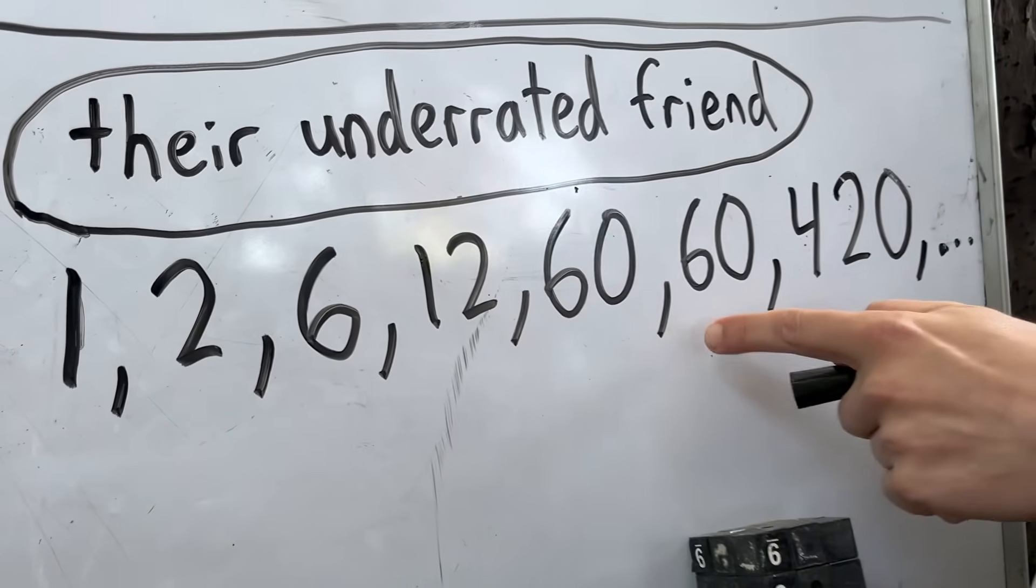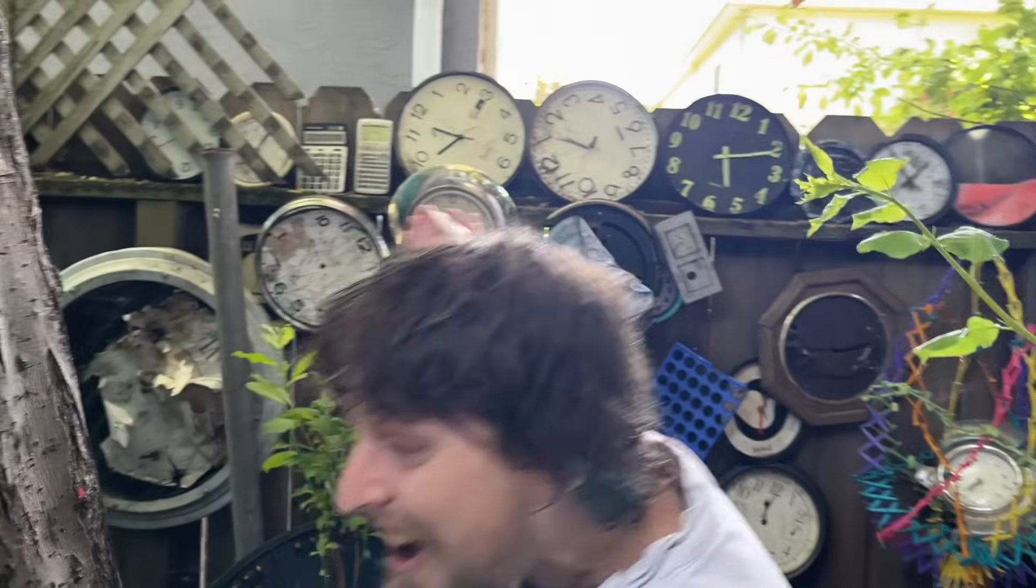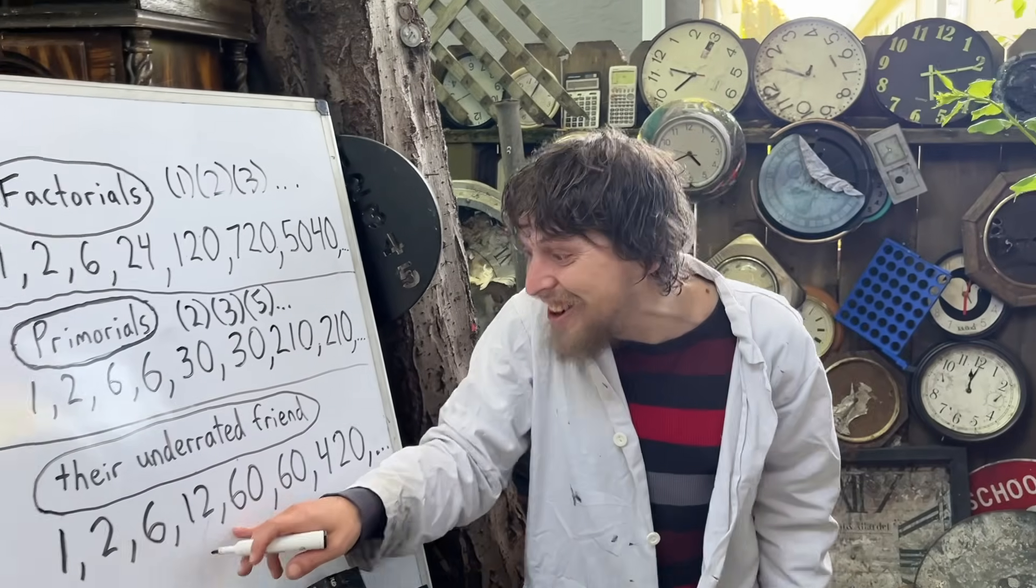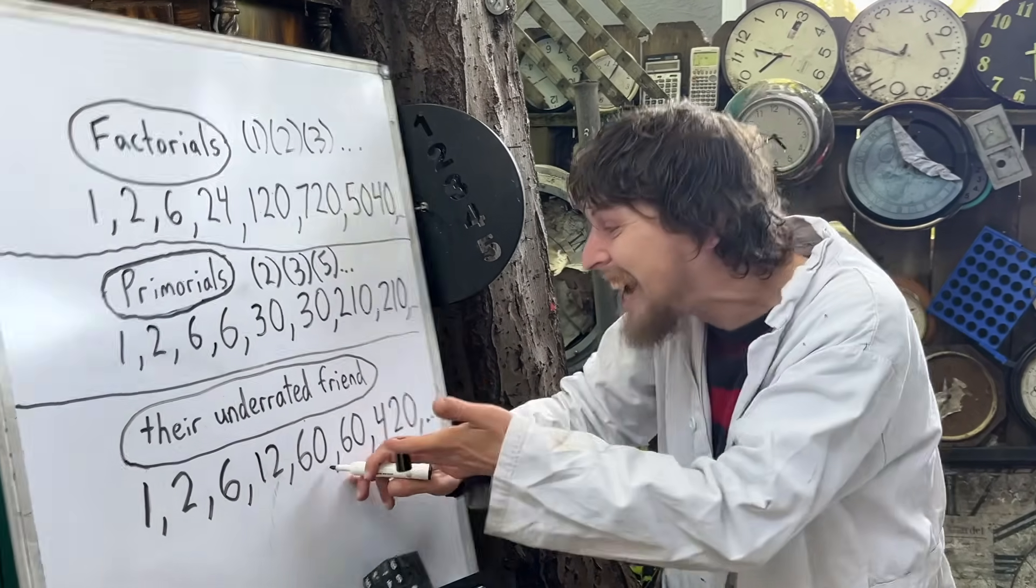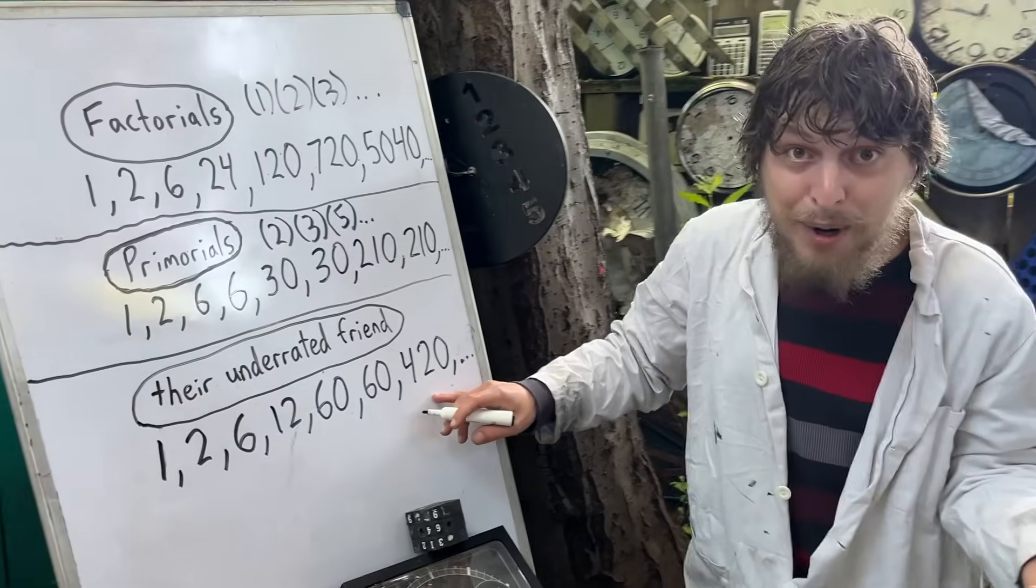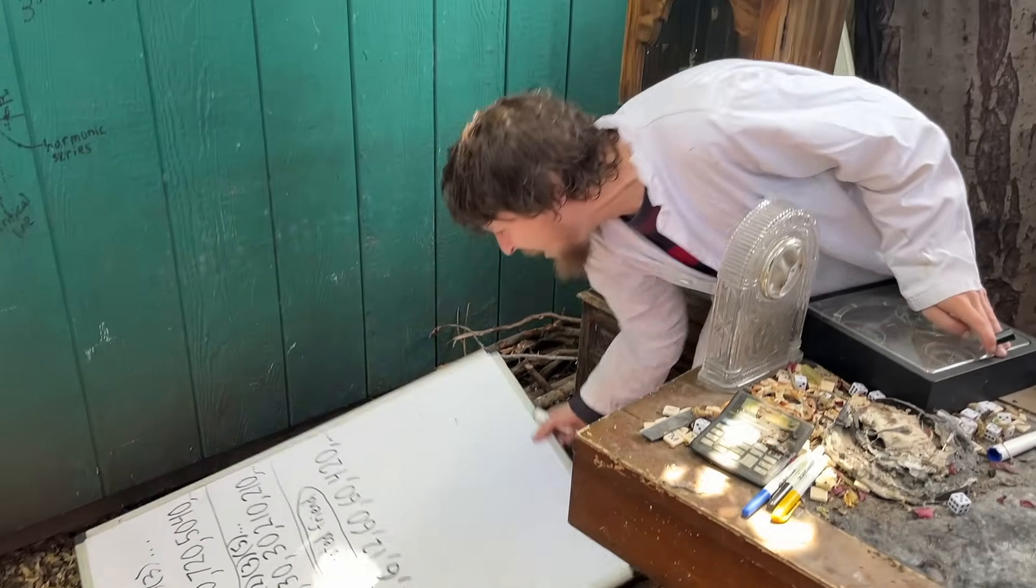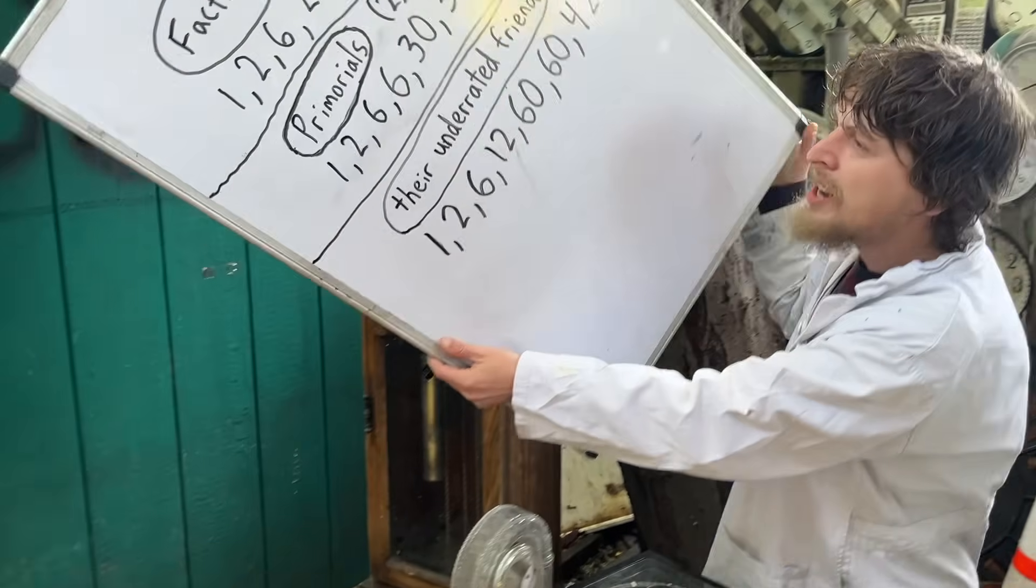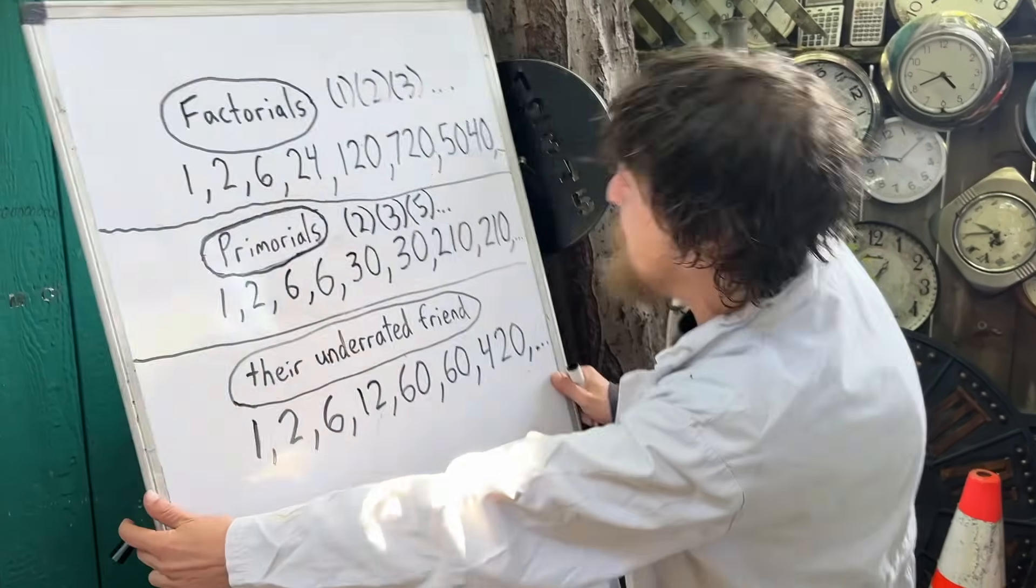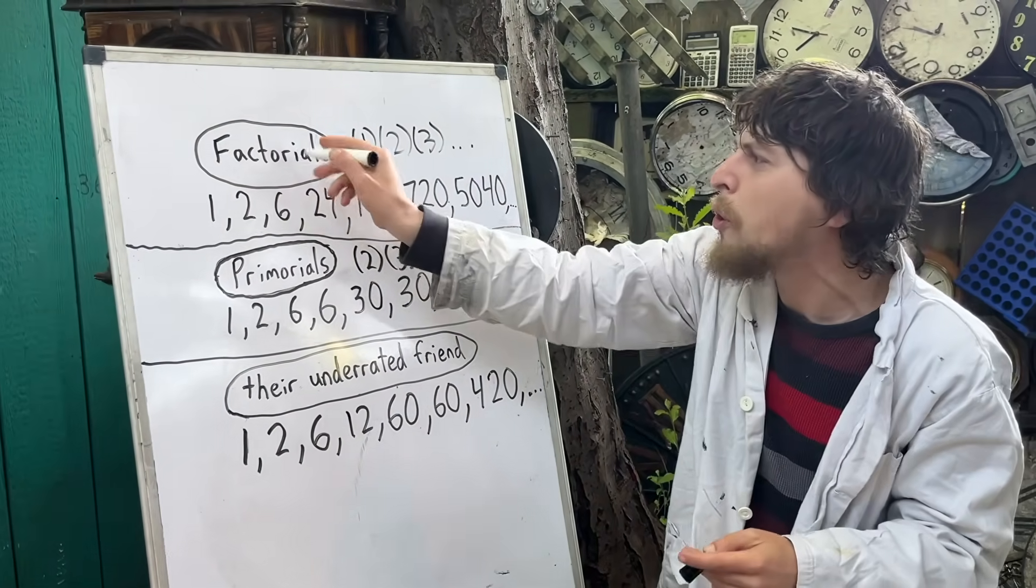Including a super clock string right here: 12, 60, 60. It's like the amount of hours on a clock, the amount of minutes on a clock, and the amount of seconds on a clock. And then we get a classic meme number, and then we get some more divisible things. Now, what is this sequence? And why do I think that it would more properly deserve the name factorial?